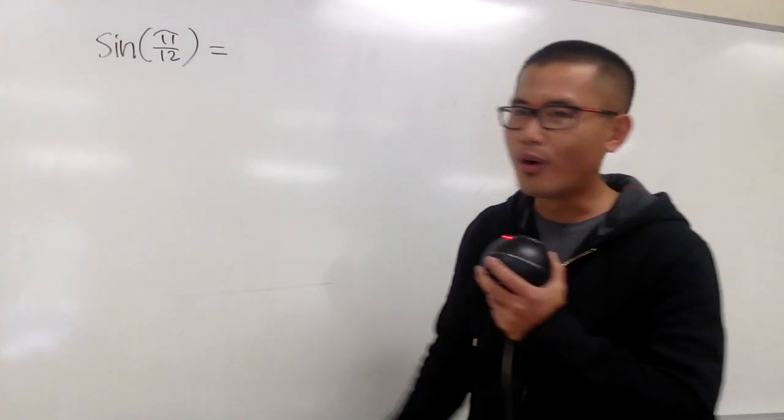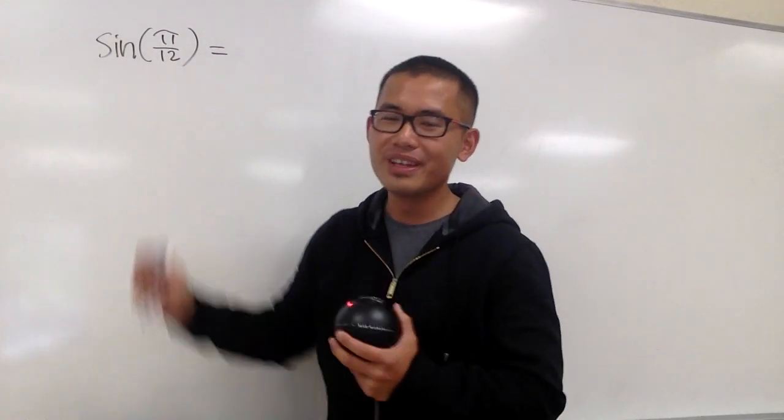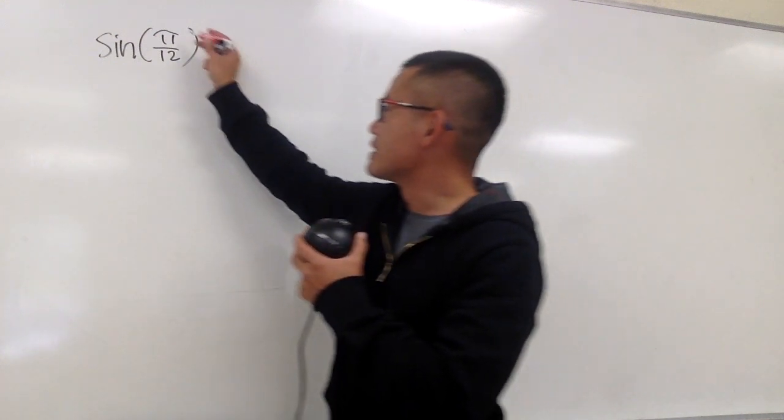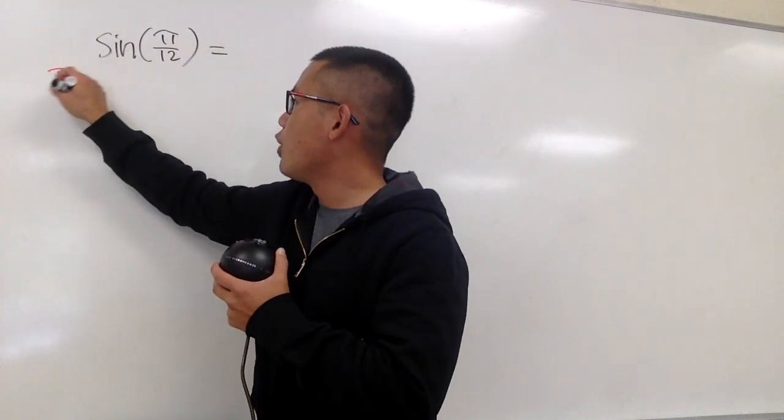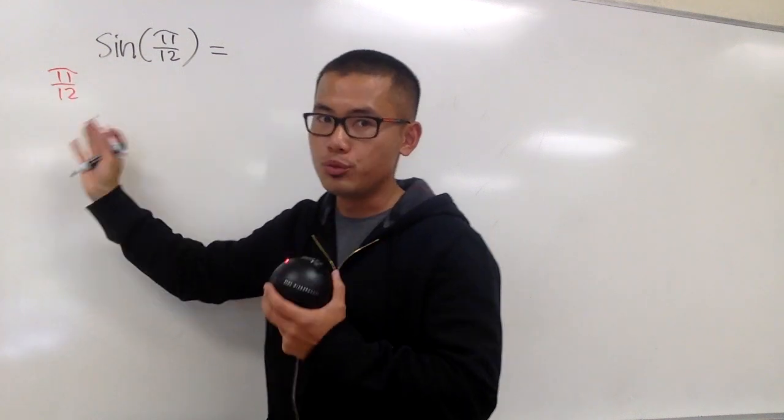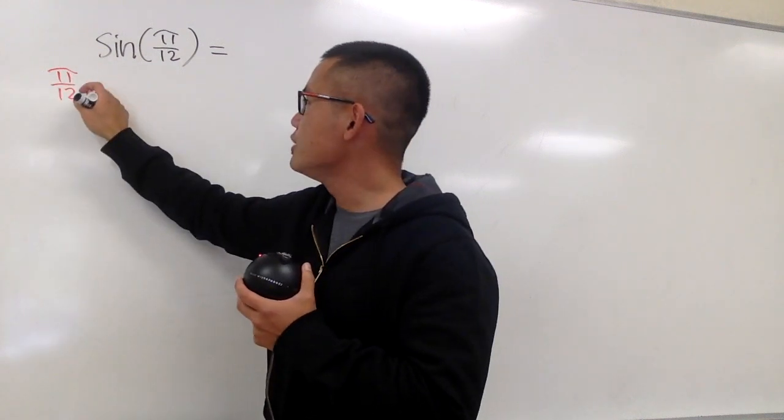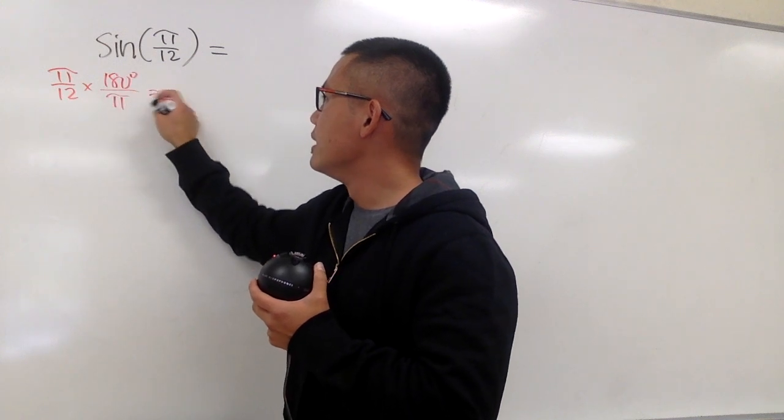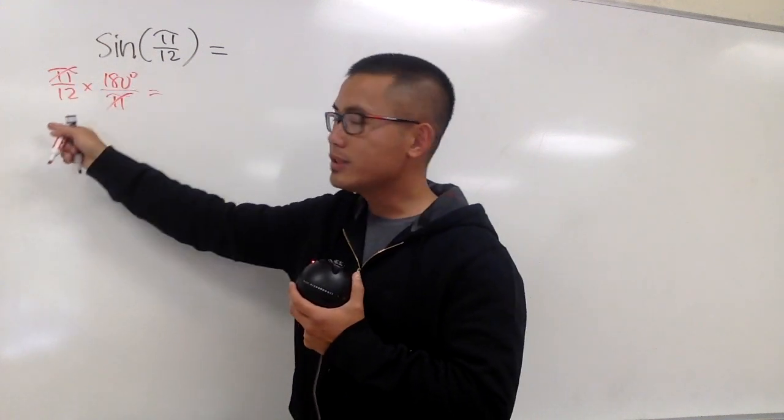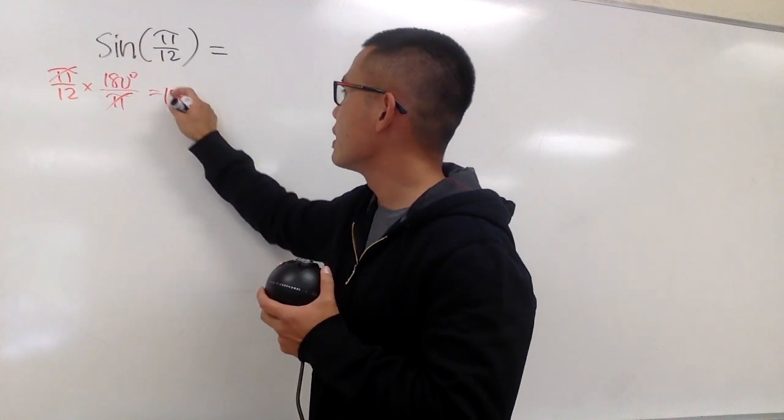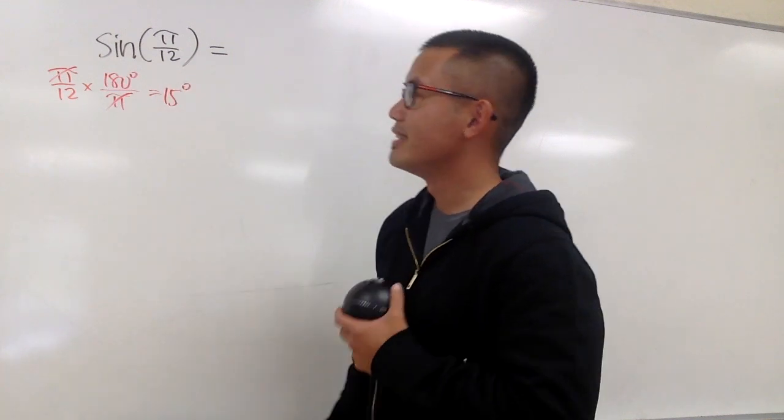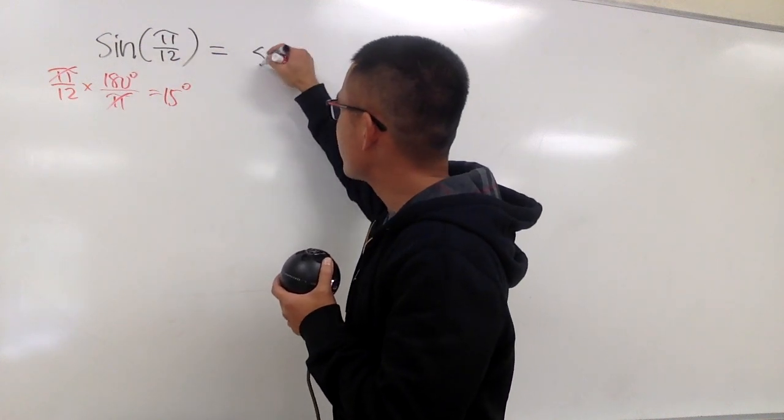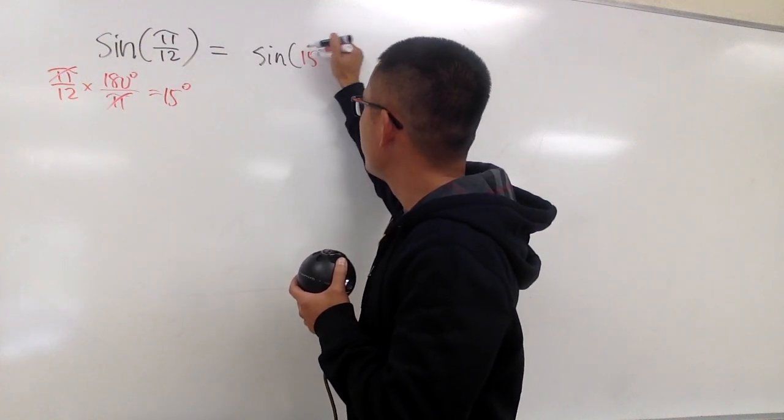We are going to figure out the exact value for sine of pi over 12. It would be a good idea to work with degrees. Let's take pi over 12, which is in radians, and multiply by 180 degrees over pi. This and that will cancel. When you reduce that, you end up with 15 degrees. In other words, this is the same as asking what's the exact value for sine of 15 degrees?